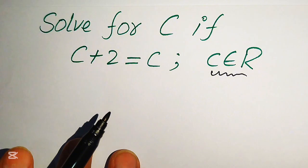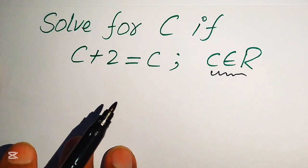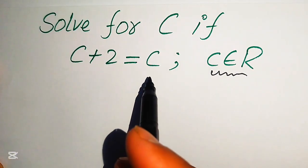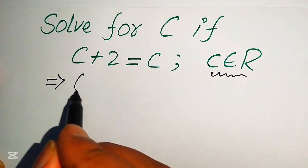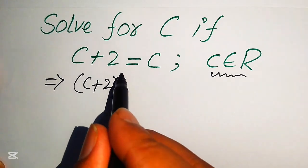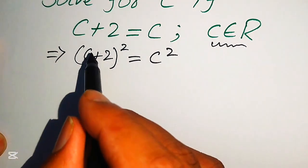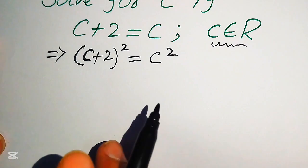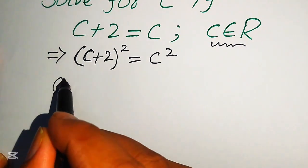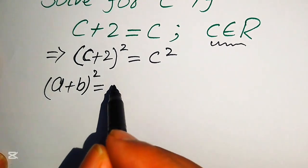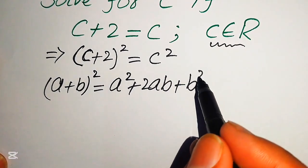Now we move towards the solution of this problem. The very first step is to eliminate c from the right hand side. For this, we take the square of both sides, so it will be written as (c plus 2) whole square equals c square. Now we need to expand the square on the left hand side, for which we apply the formula: (a plus b) whole square equals a square plus 2ab plus b square.